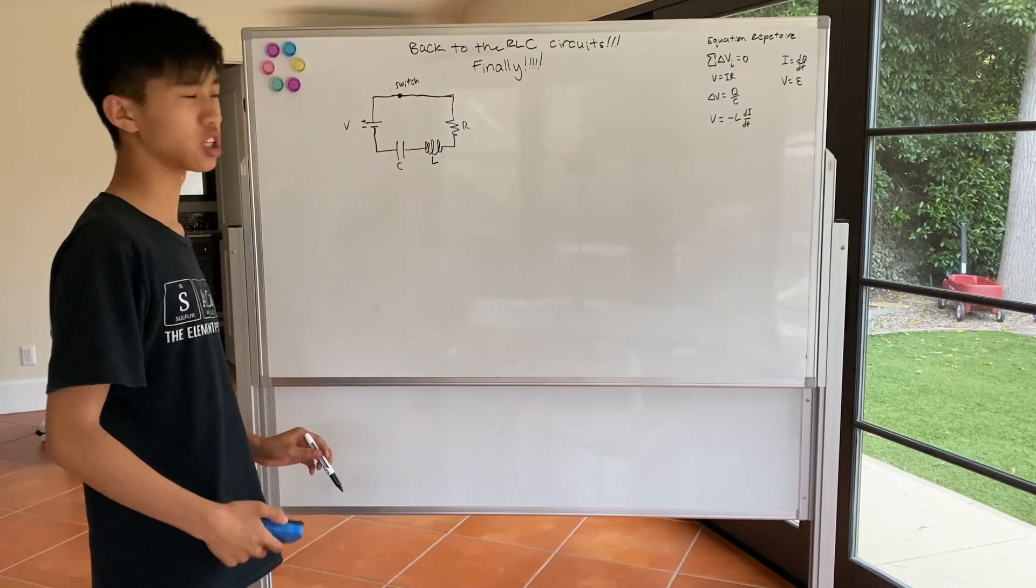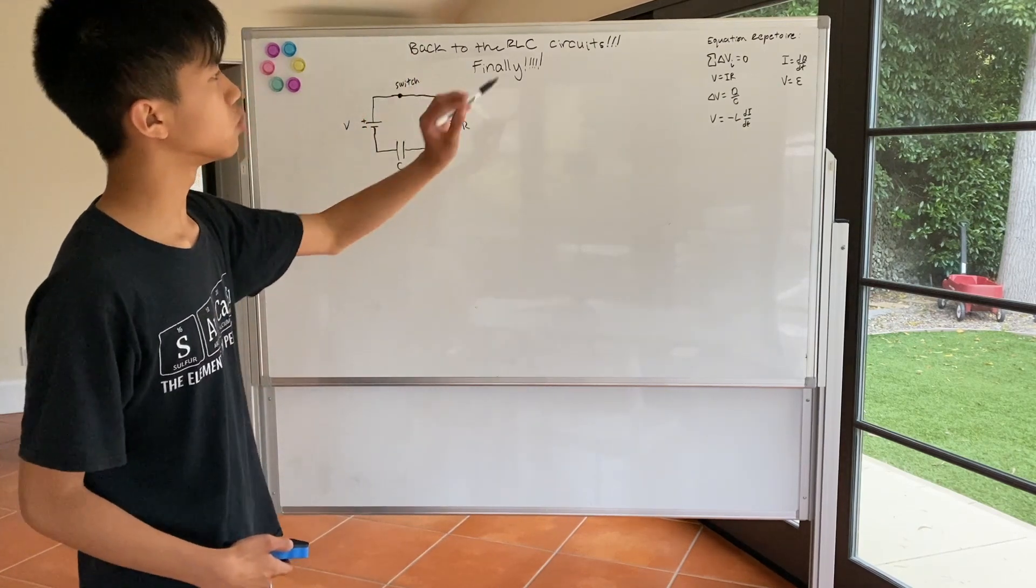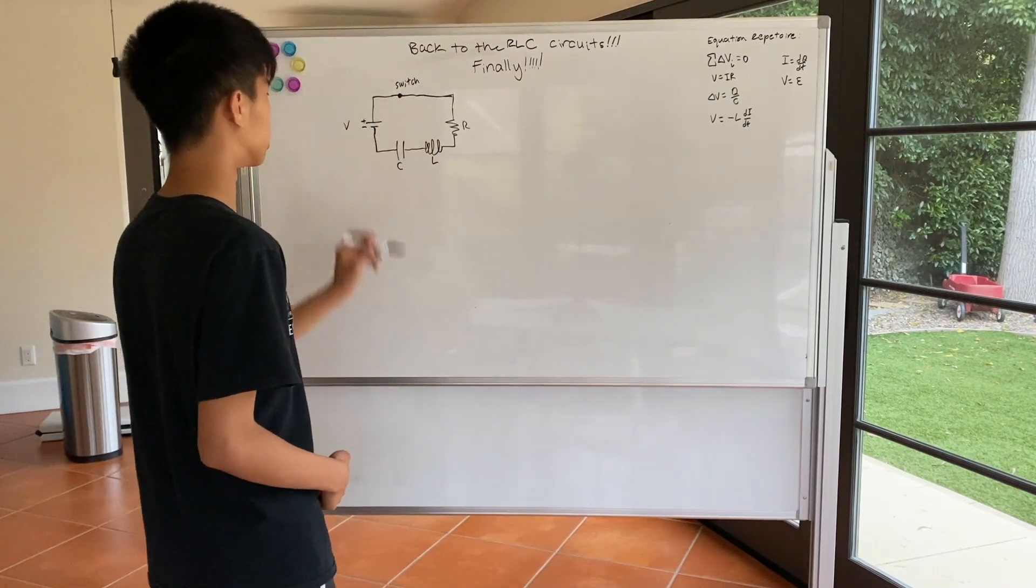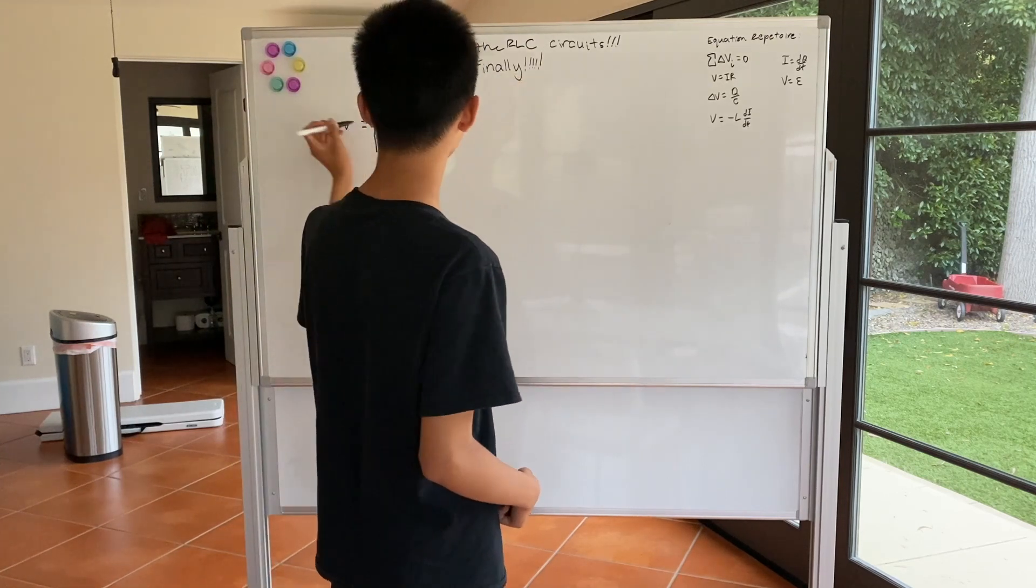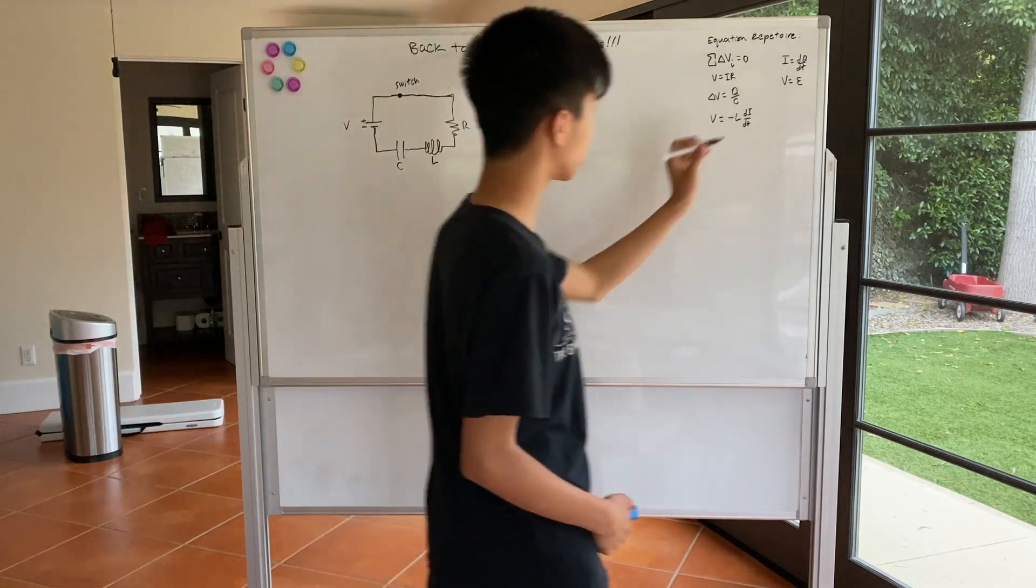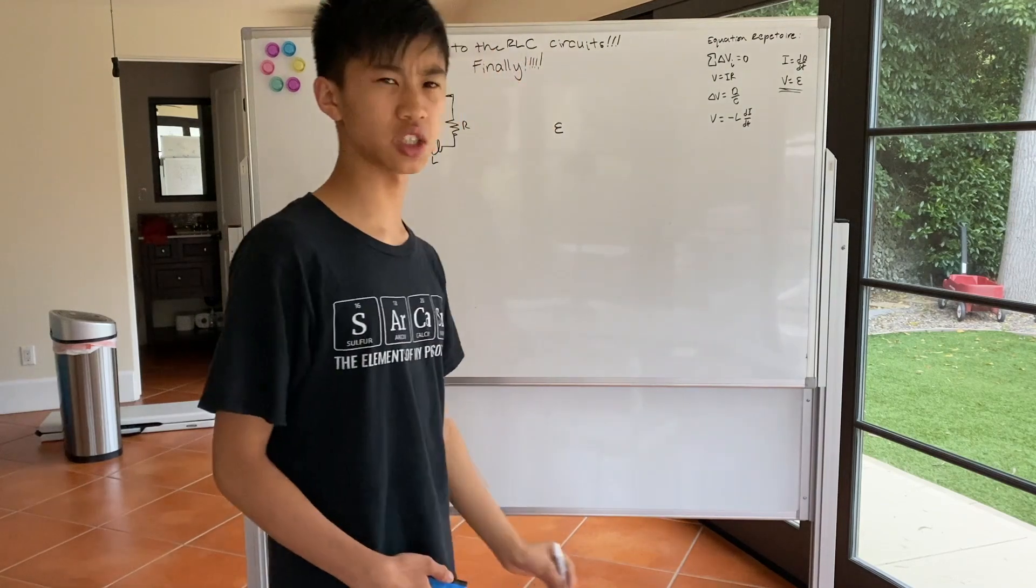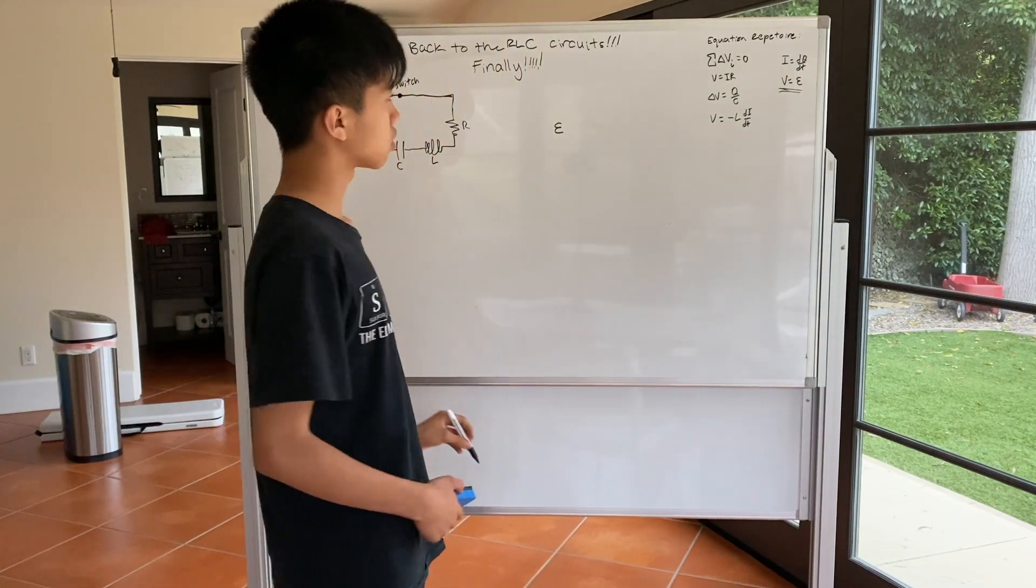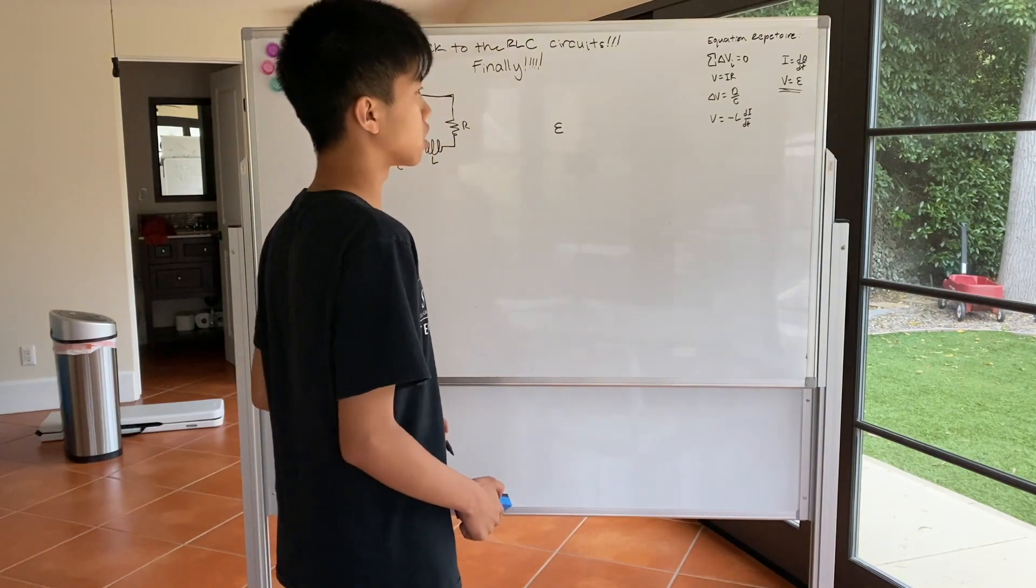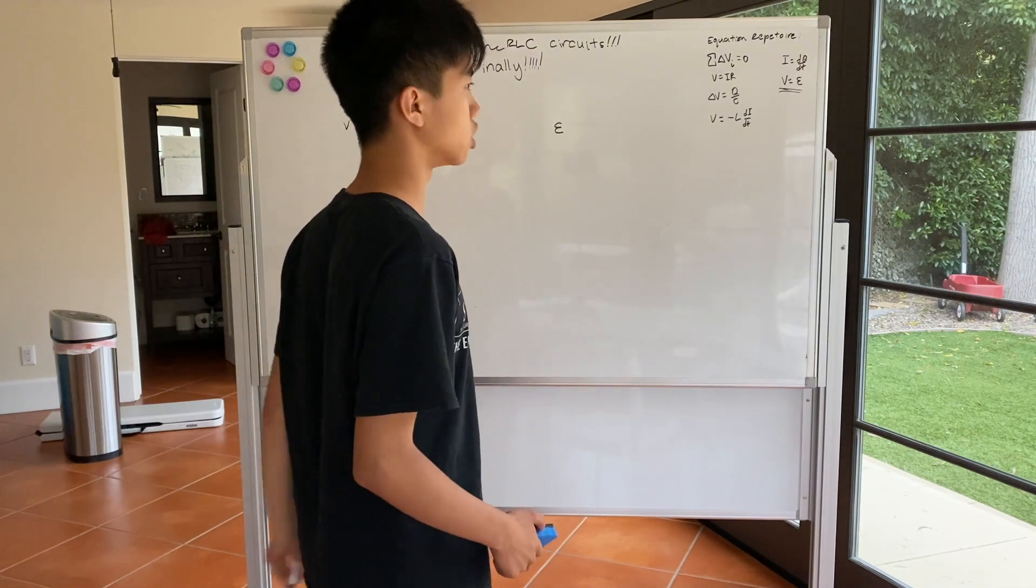So in order to get to the differential equation in question, first of all, let's use Kirchhoff's rule to figure out what all this is. So we have V, which is a positive change in potential, and here we have a new equation, V equals epsilon. Epsilon is just EMF, so if you saw my video on Faraday's Law, epsilon is basically the electromotive force, which is basically just the voltage that the battery supplies.